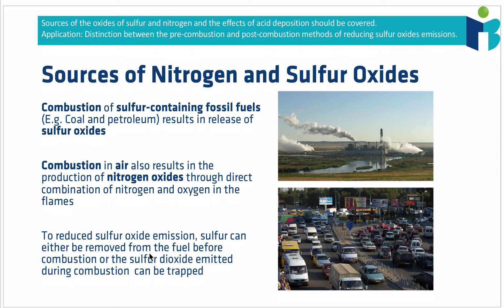The key methods we currently use to reduce sulfur oxide emissions are either pre-combustion or post-combustion. Pre-combustion methods involve cleaning the fuel — getting the sulfur out in the first place, so that when you combust it you're not also combusting sulfur. Post-combustion methods mean you leave the fuel as it is, burn it, and then make efforts to reduce sulfur oxide emissions after combustion — typically by trapping sulfur dioxide in a solid so it's no longer a gas and can't go into the atmosphere to form acid rain.